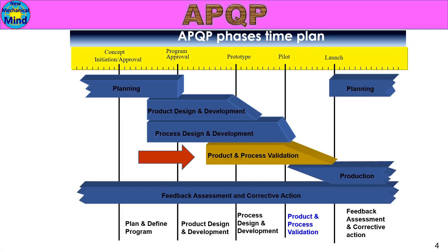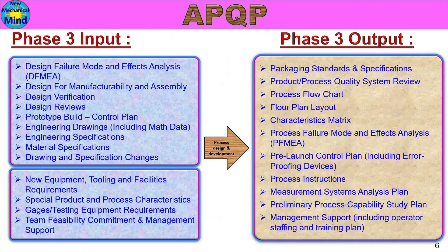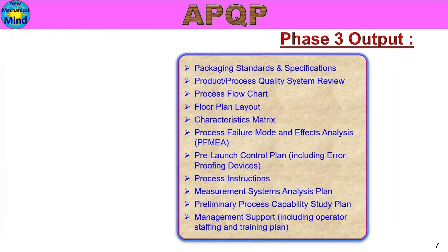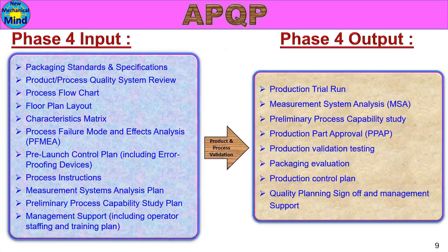In the next video, we will see APQP Phase 4: Product and Process Validation. We will see the objective, Phase 3 output as Phase 4 input, and Phase 4 output. In this video, we will see the content.